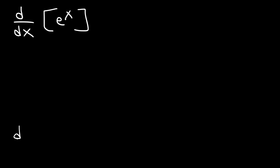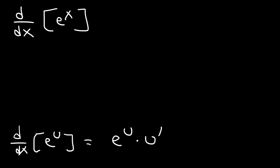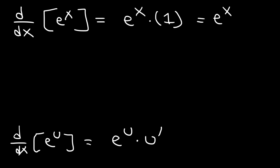Here's the formula you need to know. The derivative of e to the u, where u is some function, is going to be the same thing, e to the u, but times the derivative of u. So the derivative of e to the x is going to be e to the x times the derivative of x, which is 1. So it's simply e to the x.